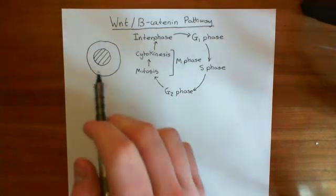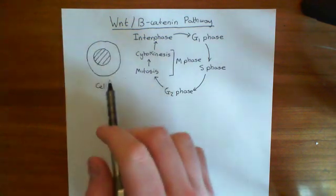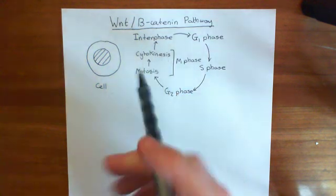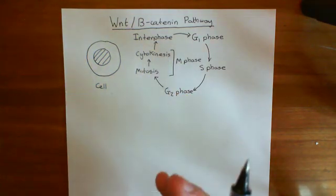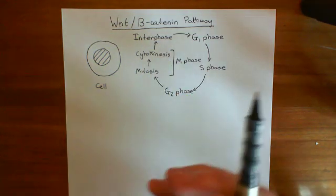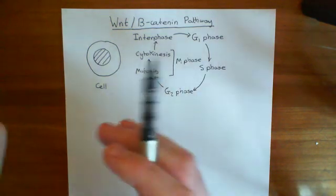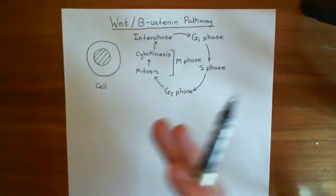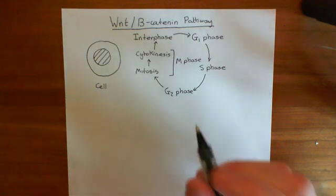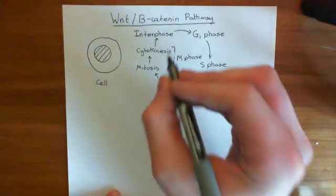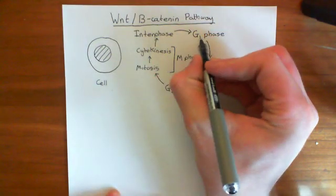What we have at the moment is this cell sitting in interphase. It's not dividing, just sitting and doing its chemical reactions, respiring, making proteins and whatever else cells do. How do we get it to go into G1 phase? How do we get it to begin dividing?